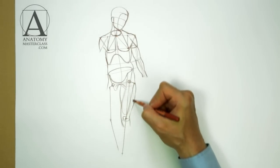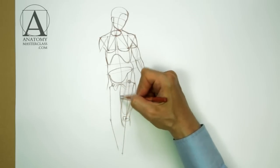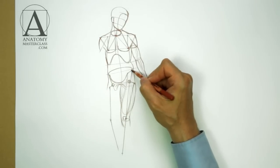The quadriceps muscle group defines the frontal shape of the upper leg. The adductor group of muscles gives volume to the inner upper portion of the thigh.